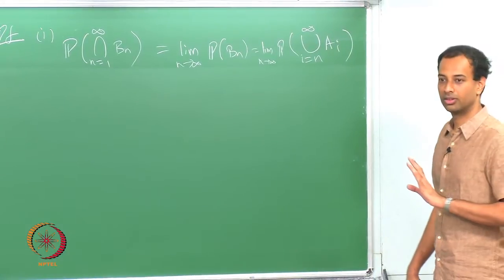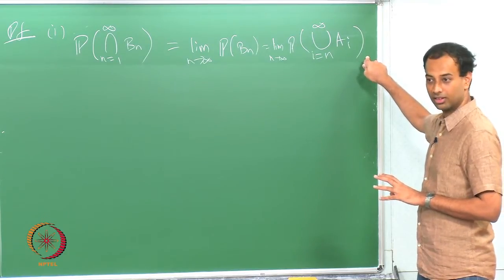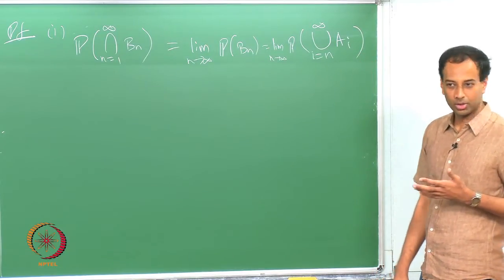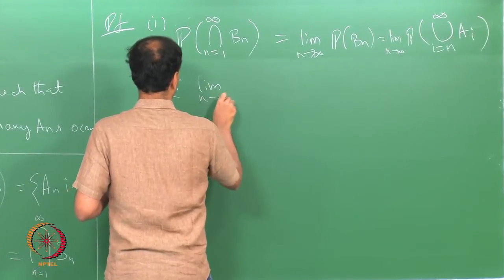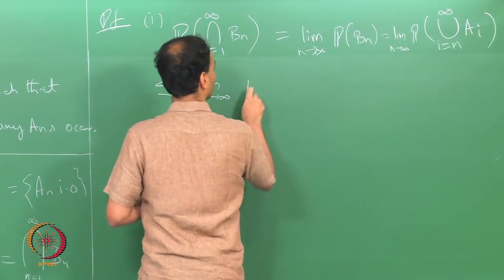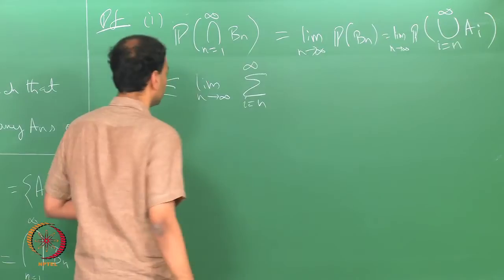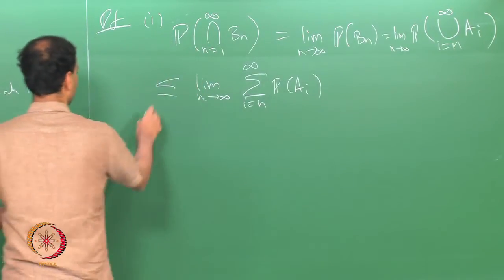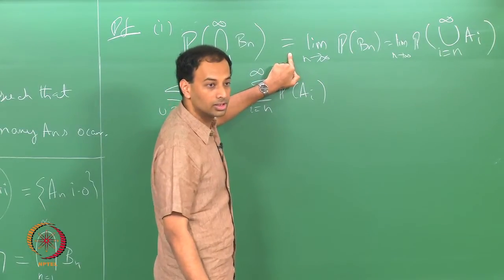I have just copied what B_n is. Now I can use the union bound — I have a union of events, so the probability of a union is less than or equal to the sum of the individual probabilities. This gives me less than or equal to the limit as n tends to infinity of the sum over i equals n through infinity of probability of A_i. This step is the union bound; the previous step was continuity of probabilities.